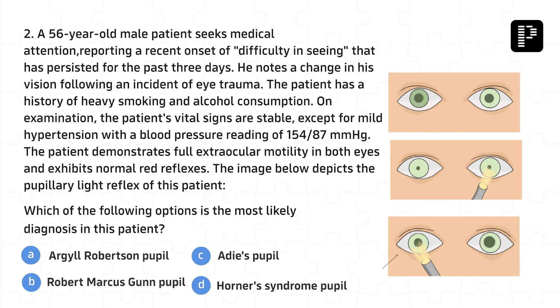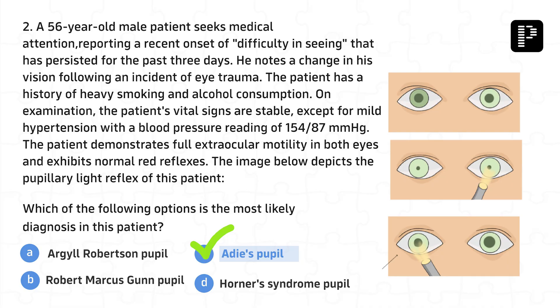Two more questions. A 56-year-old male reports difficulty seeing for the past three days following eye trauma. He has a history of heavy smoking and alcohol consumption. On examination, vital signs are stable except mild hypertension at 154/87. Full extraocular motility and normal red reflexes are present. The image depicts the pupillary light reflex. What is the most likely diagnosis? Both teams answer: relative afferent pupillary defect. But the answer is Adie's pupil. Please clap — it's a good confronting.